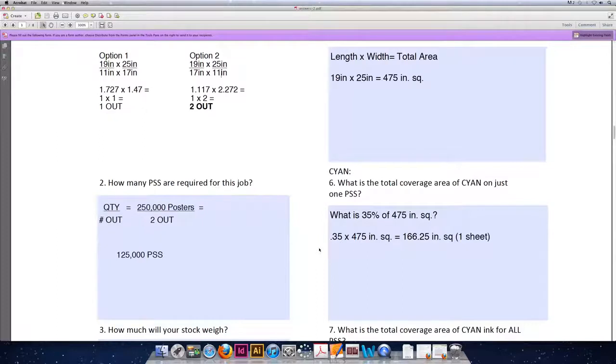So when we fill out this formula, we should come up with 0.35, and we divide by 100, multiplied by 475 square inches to come up with 166.25 square inches or inches squared for every one sheet of paper.